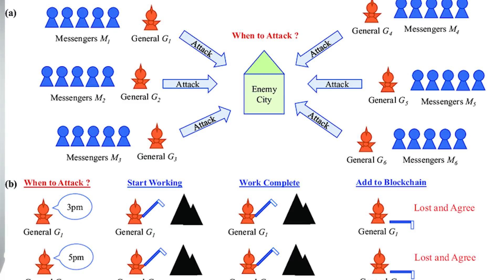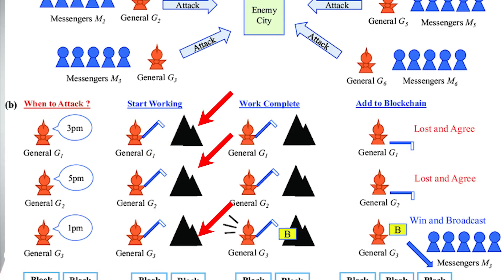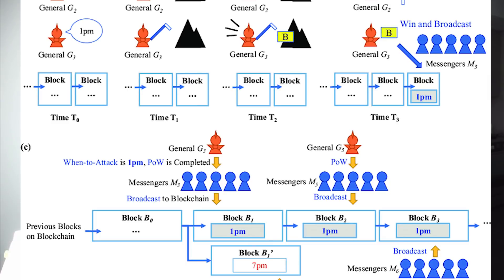Say one of them says 12 p.m., another says 4 p.m., another says 3 p.m. How you solve this problem is they all go to work solving a math problem. When one of them finds the answer, he broadcasts the message to all the others via their encrypted channel. Every time the math problem is solved — which is pegged to be about 10 minutes — that adds a new block to the chain. Right now, people are working on these blocks to make sure that they're legit, and this changes everything.